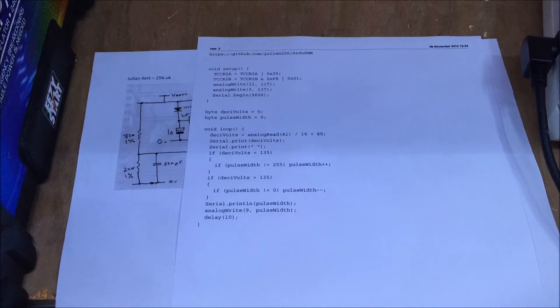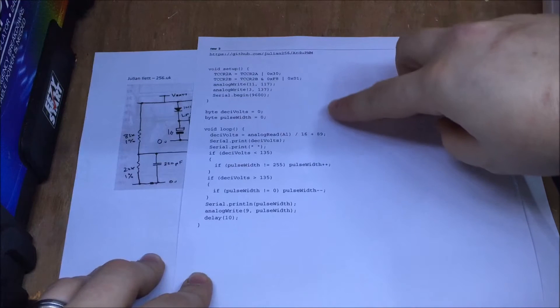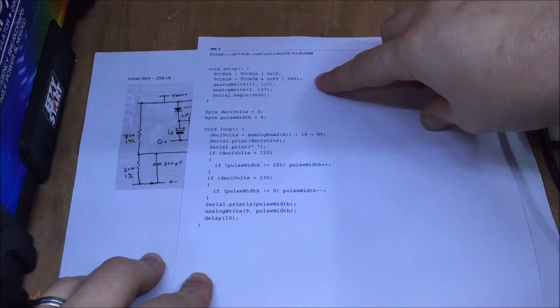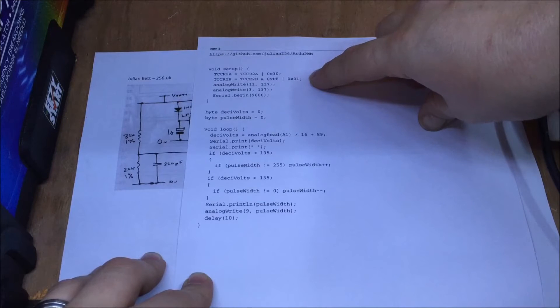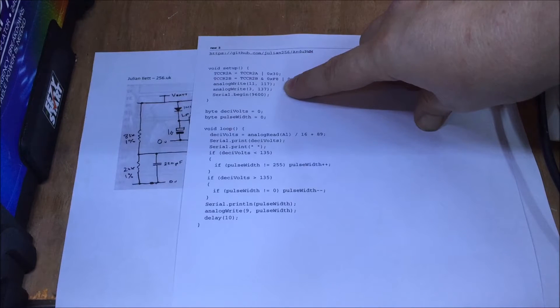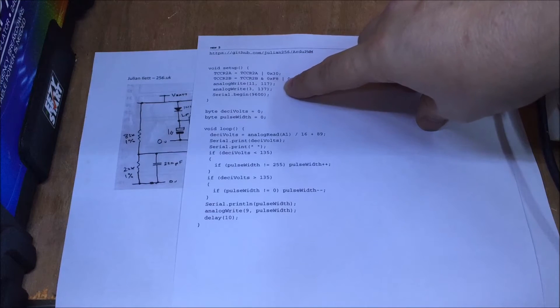Now I certainly recommend you go look at Julian's YouTube channel and follow his videos about the Arduino PWM charge controller, where he explains what all this code does. But primarily, these variables set two of the pins, 11 and 3, to be out of phase from each other for a charge pump, and change the frequency as well to about 15kHz, I think, off the top of my head. He's using digital pins 11 and 3 to power the charge pump.